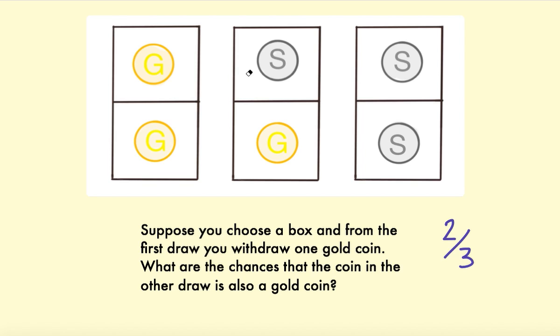And also this idea that the first box has two gold coins and actually picking either of those gold coins counts as a separate possibility.